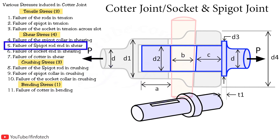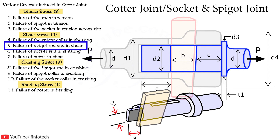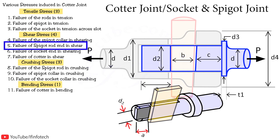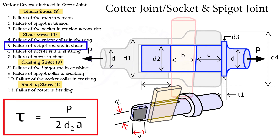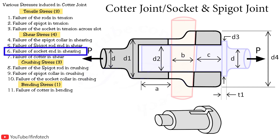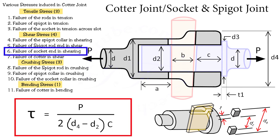The next failure occurs due to double shear stress at the distance from end of slot to end of spigot, with the formula being load P divided by the area of cross-section. The next failure occurs due to double shear stress at the thickness of socket collar, with the formula: load P divided by area of cross-section, i.e., 2 times (d4 minus d2) times thickness of socket collar C.